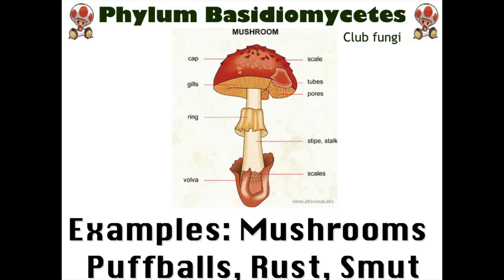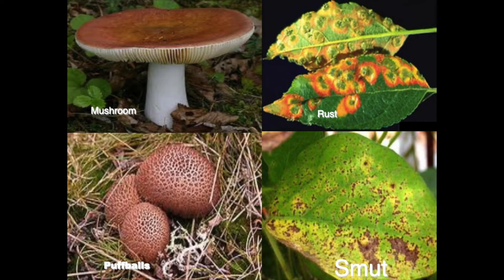The next phylum is Basidiomycetes. A great example is mushrooms — not only mushrooms are in this phylum but also puff balls, rust, and smut. These are club-like fungi. The structural components of a mushroom you need to know include the cap, the gills, the spores, and the stipe — also known as the stalk. Rust is a fungus; it's not the same as oxidation of metal — it looks a yellowish-red color, which is why they call it rust. Smut looks like dirt but is actually a fungus.